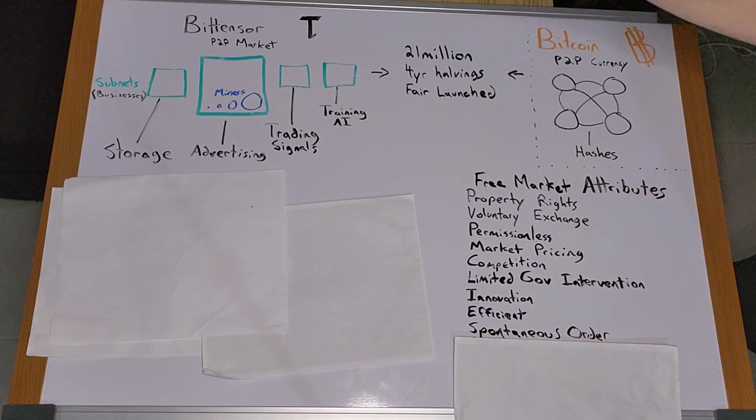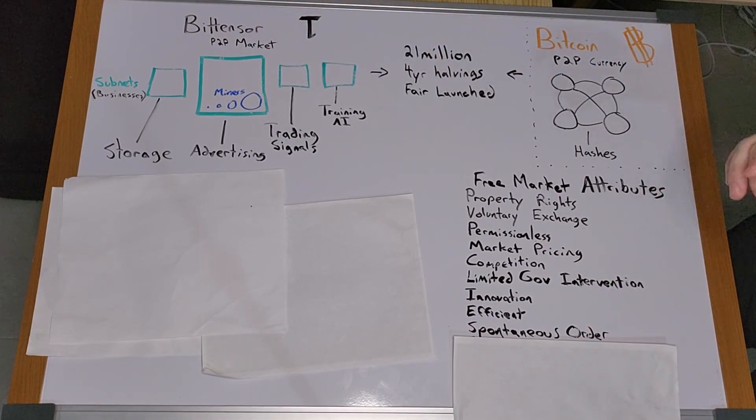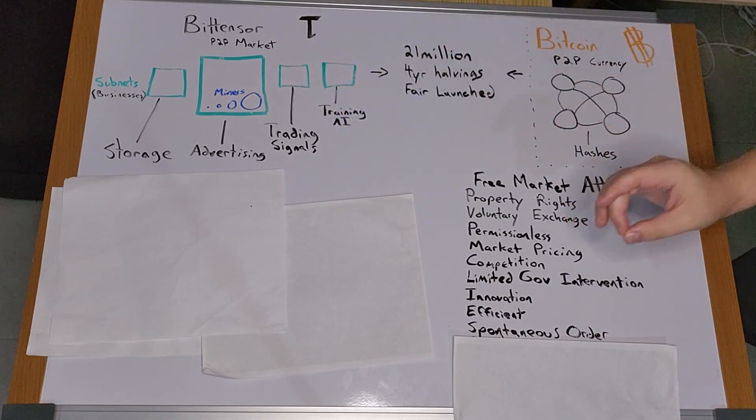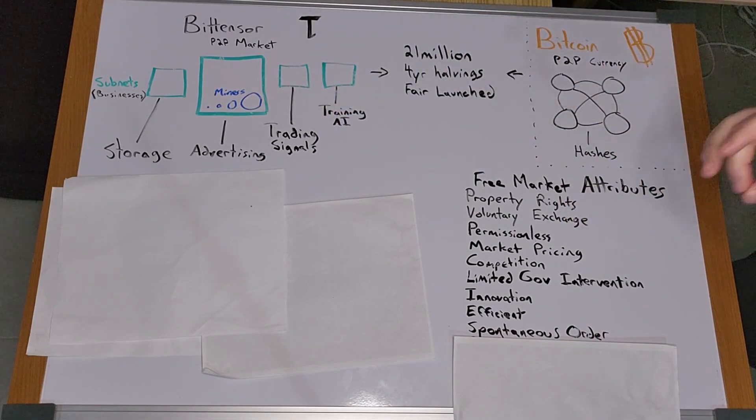Spontaneous order. BitTensor operates through incentives. The type of work is judged by stakers and the work being done is graded by validators. Only work that is deemed valuable by stakers is paid for.